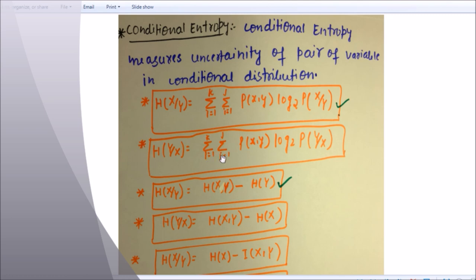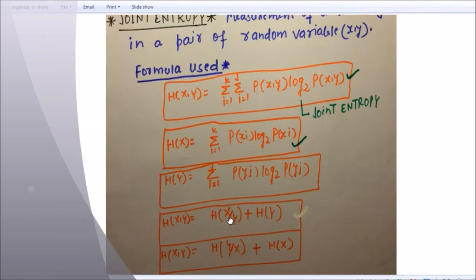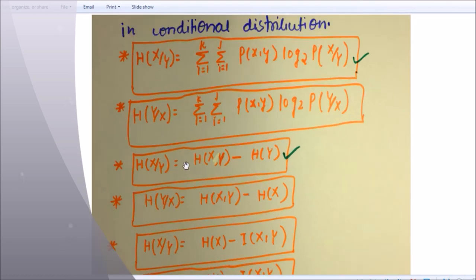Similarly, H(Y|X) is equal to summation of i equals 1 to k and summation of j equals 1 to j of p(x,y) log base 2 of p(y|x). Memorize this one and interchange the variables to get the other. Memorize only the formula with the green pin. H(X|Y) is equal to H(X,Y) minus H(Y) — memorize this.